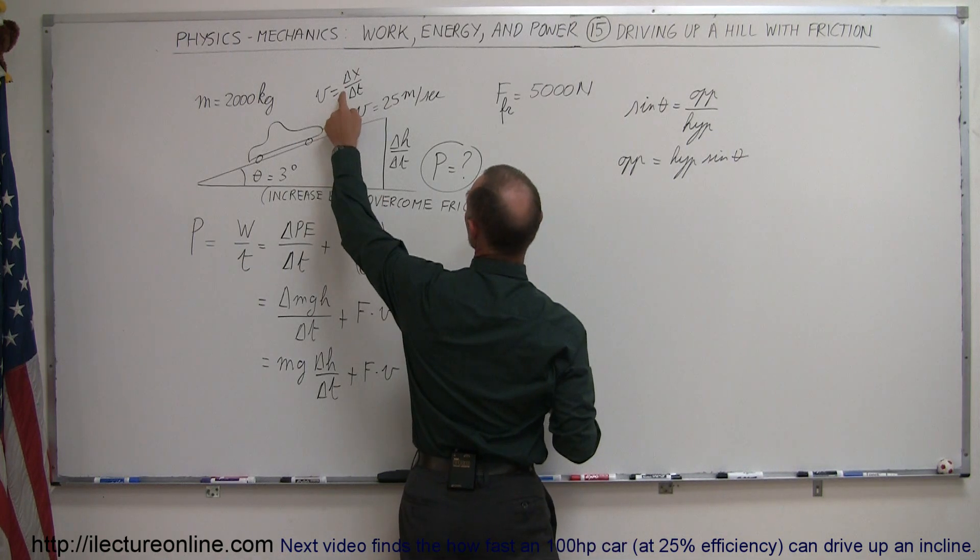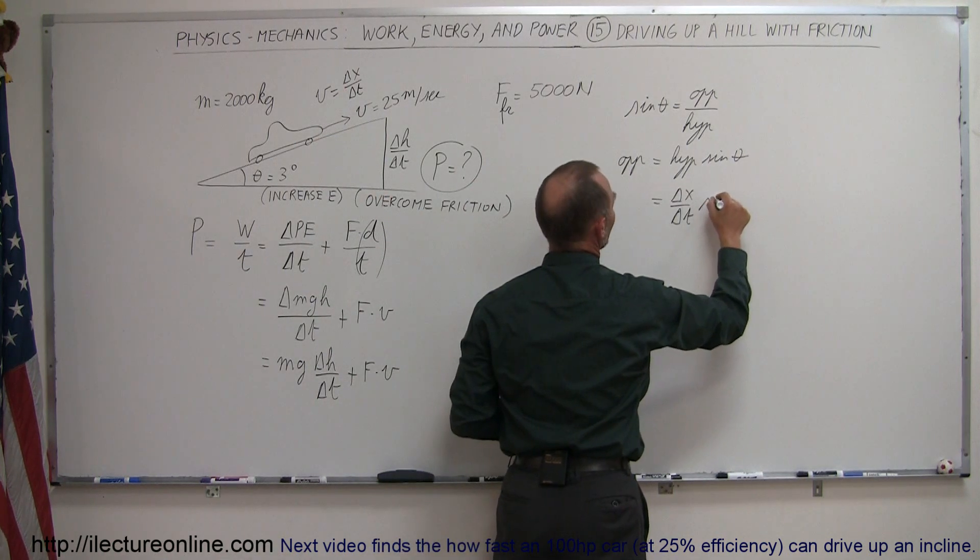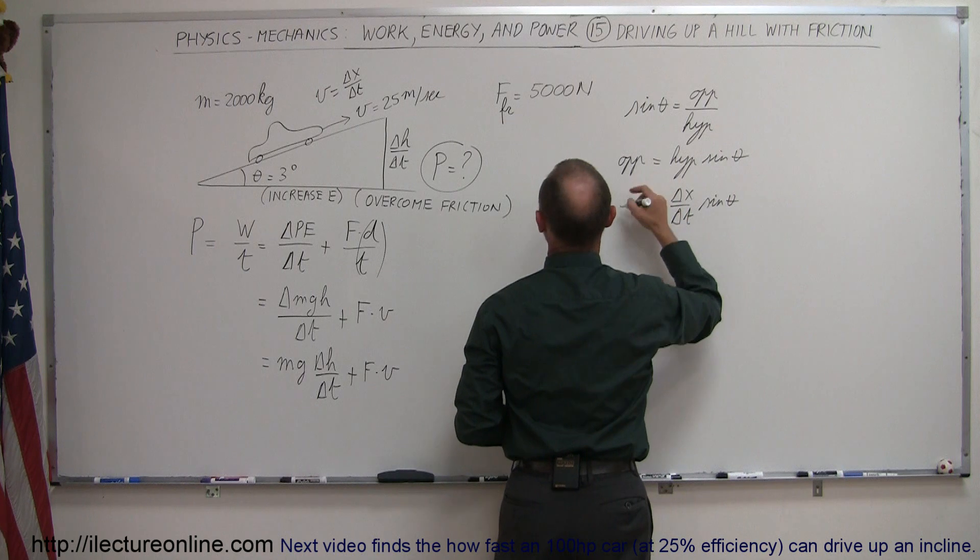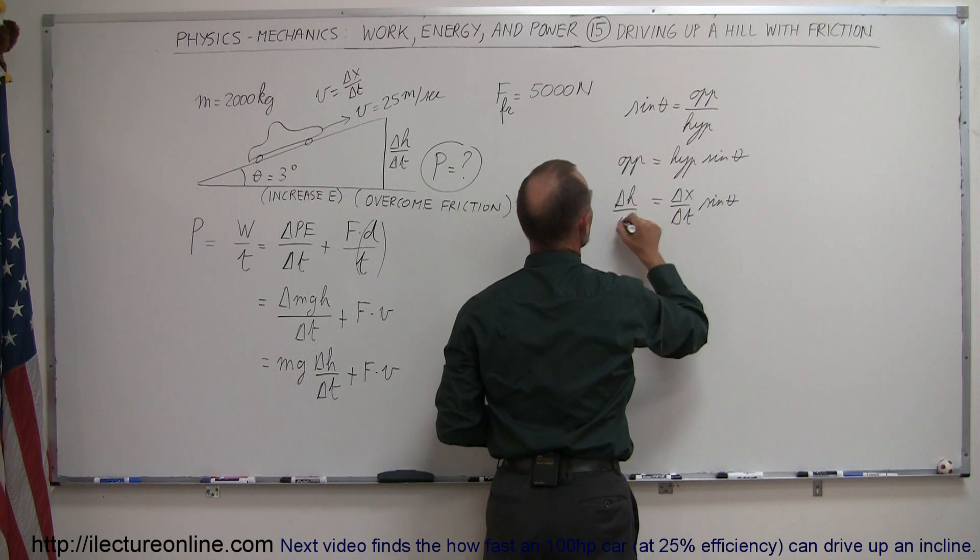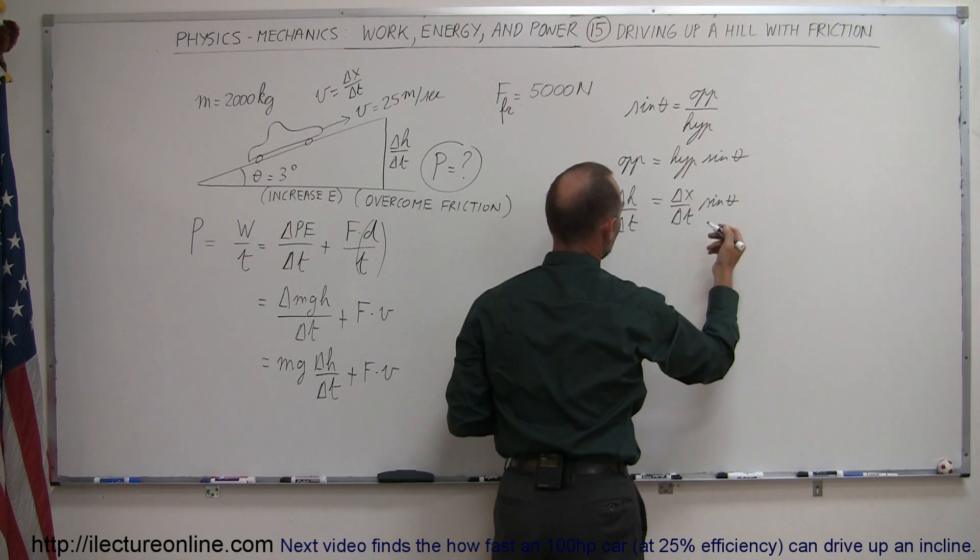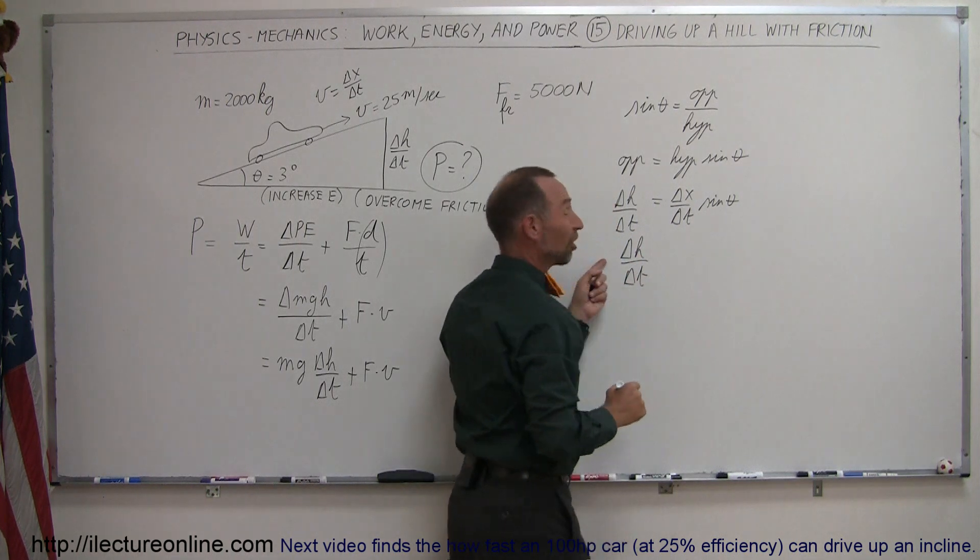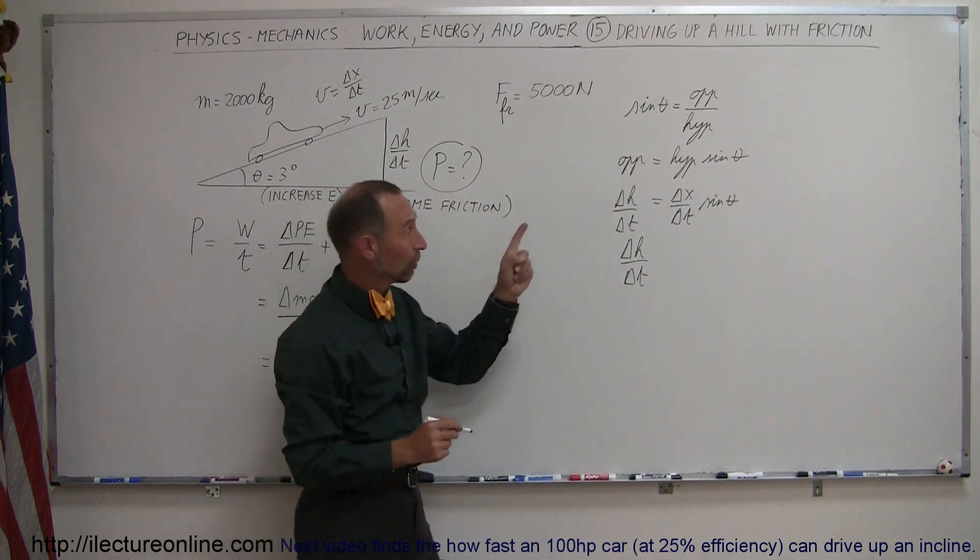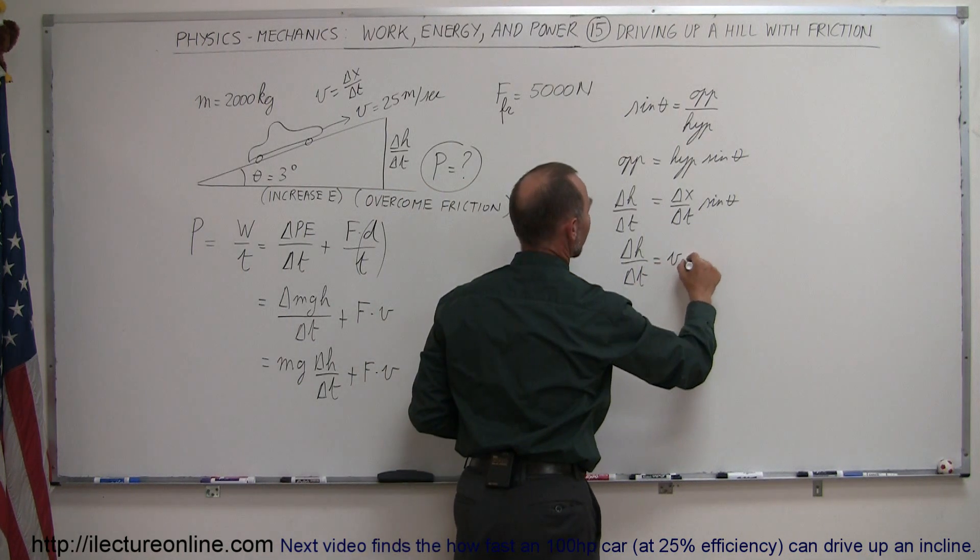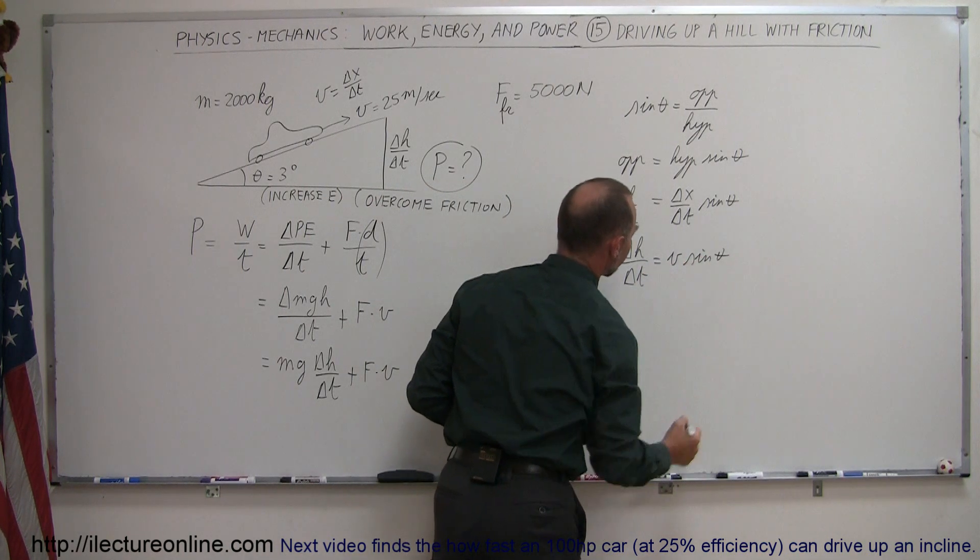Now the hypotenuse is delta X delta T times the sine of theta. The opposite side will be delta H delta T. And delta X delta T, again, is velocity. So delta H delta T, the rate at which the car gains height, is equal to the velocity times the sine of the angle theta.